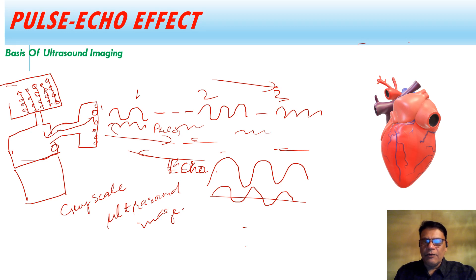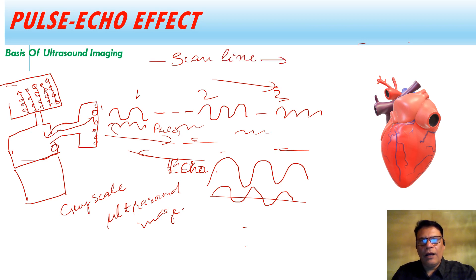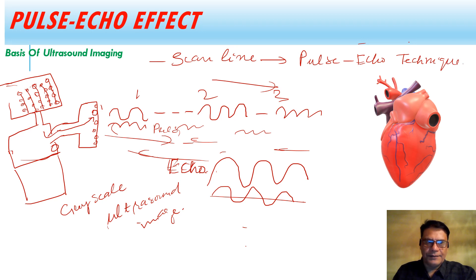The ultrasound image is made up of scan lines, and these scan lines are the result of the pulse echo technique, or pulse echo effect.